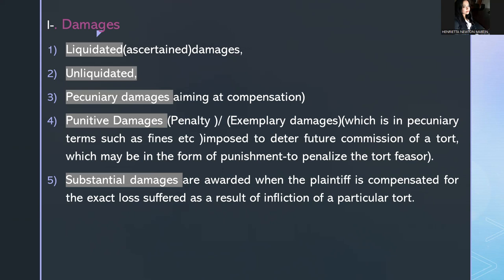Pecuniary damages relate to monetary compensation. Punitive damages — also called exemplary damages — are in monetary terms such as fines and are imposed primarily to deter future commission of tort, setting an example to others. Substantial damages are awarded when the plaintiff is compensated for the exact loss suffered as a result of the particular tort — nothing more, nothing less.